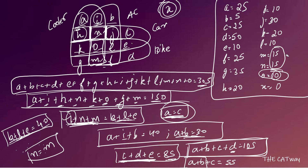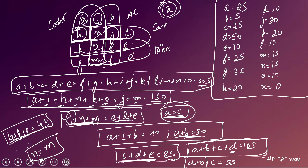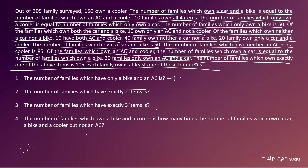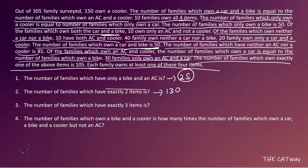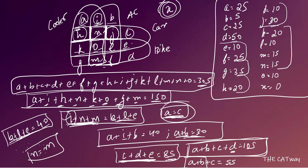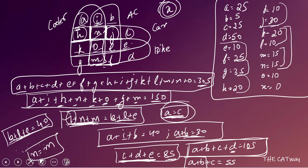Now answering the questions. Question 1: families which have only bike and AC — that is region F — F = 25. Question 2: families which have exactly 2 items — regions E through J: 10 + 25 + 35 + 20 + 10 + 30 = 130. Question 3: families with exactly 3 items — regions K to N: 20 + 10 + 15 + 15 = 60.